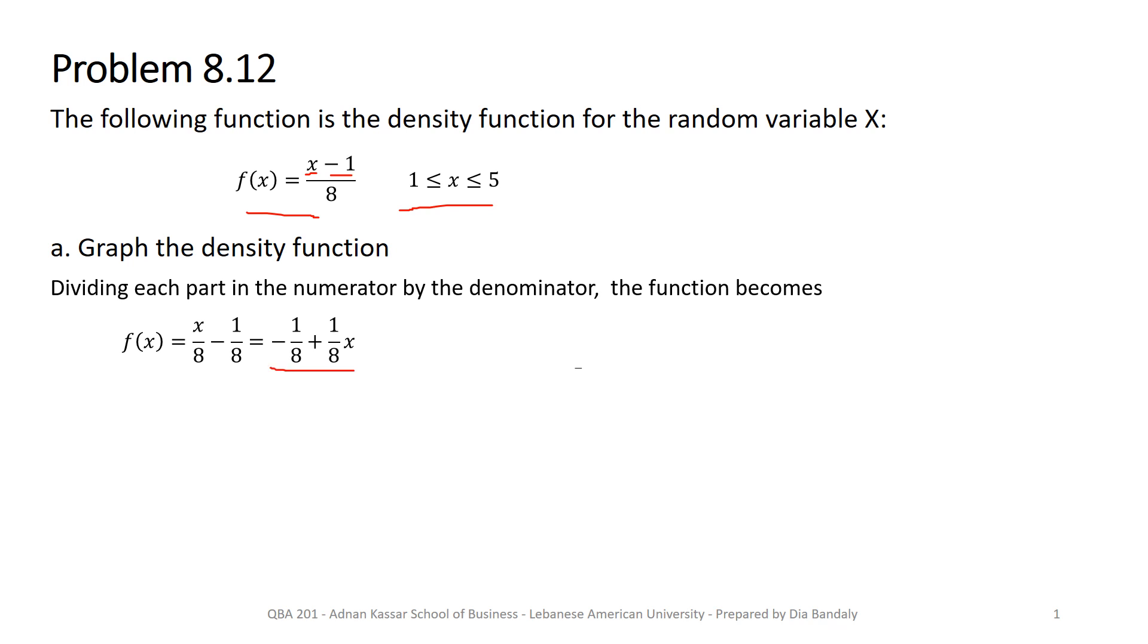And this form reminds me of a very common form which is y = a + bx, where we know that a is the intercept of a line and b is the slope of a line. This is a straight line. So it's a straight line that starts from a value on the y-axis equal to a which is the intercept. In our case it's minus 1/8 plus 1/8, so our intercept is minus 1/8 and the slope is 1/8.